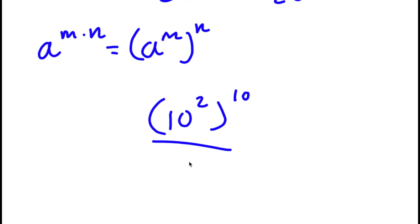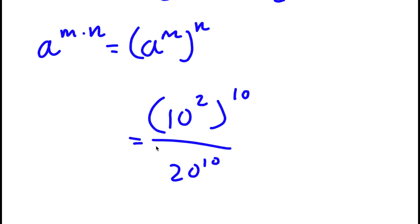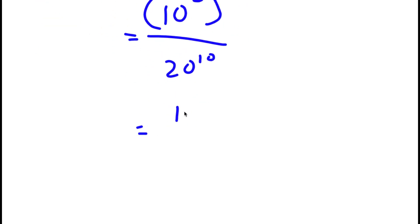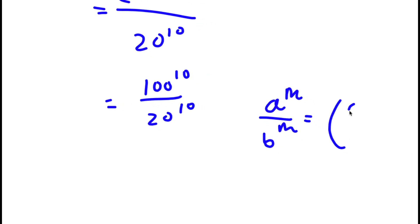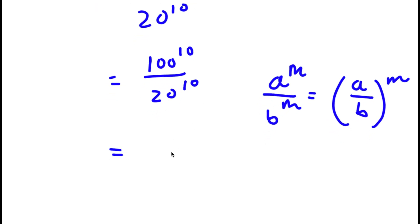Since 10 to the power of 2 is 100, I have 100 to the power of 10 over 20 to the power of 10. Using the rule a to the power of m over b to the power of m equals a over b to the power of m, I get 100 over 20 to the power of 10. Since 100 divided by 20 is 5, I'm left with 5 to the power of 10. This is my answer.